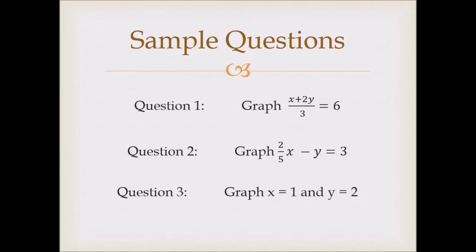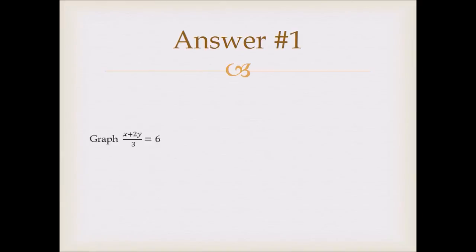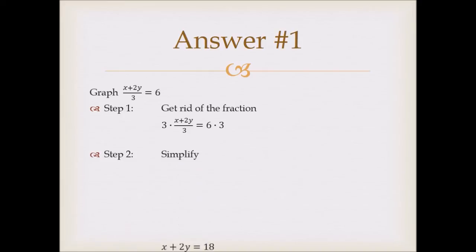So I'm going to switch over to the answers in 3, 2, and 1. Here we go. So here's answer number 1. Graph x plus 2y over 3 equals 6. So step 1, let's clear the fraction. So we're going to multiply by 3, the LCD, or the least common denominator. So the 3's are going to cancel out on the left, leaving us with x plus 2y equals 18.